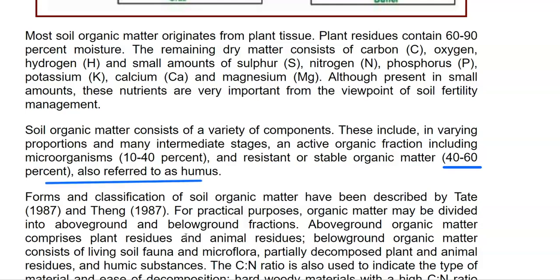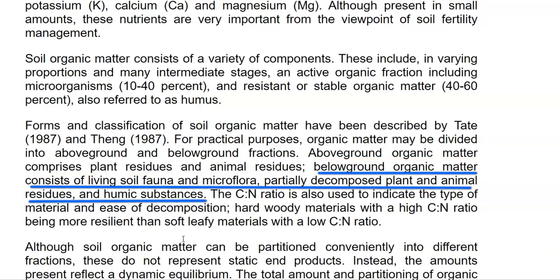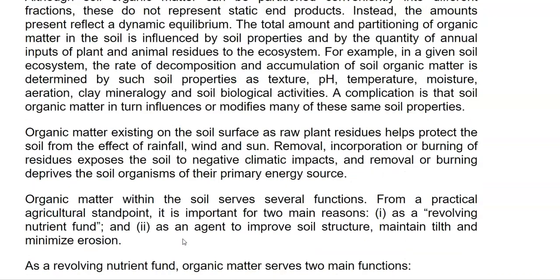Apart from that, 40 to 60% of the organic matter may consist of highly resistant-to-degradation compounds like humus. For a practical purpose, the organic matter can be divided into those that have been present above as well as below ground fractions. Above ground organic matter consists of plant residues and animal residues, whereas below ground organic matter includes soil fauna and microflora — microorganisms that play an important role in organic matter decomposition — as well as plant and animal residues and the toughest to degrade substances such as humic acids or humic substances.